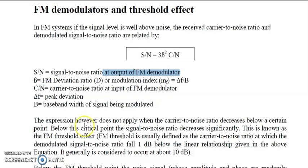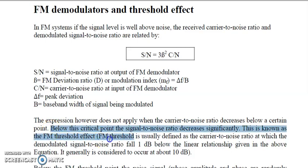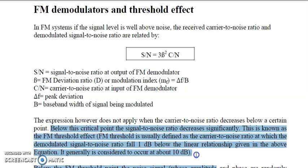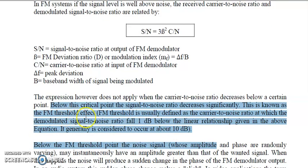However, this expression does not apply when the carrier-to-noise ratio decreases below a certain critical point. Below that point, the signal-to-noise ratio decreases significantly. If the carrier-to-noise ratio is above a certain value, the receiver output is acceptable and we can get a clear voice, but below that critical point the signal-to-noise ratio drops sharply. This is known as the FM threshold effect.